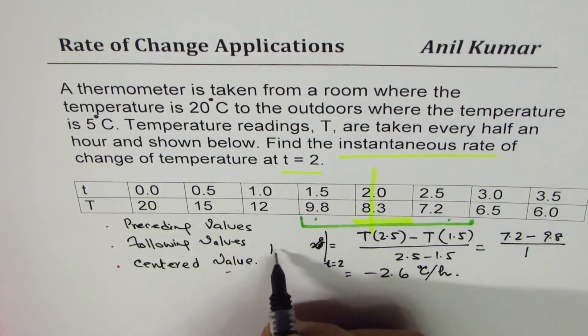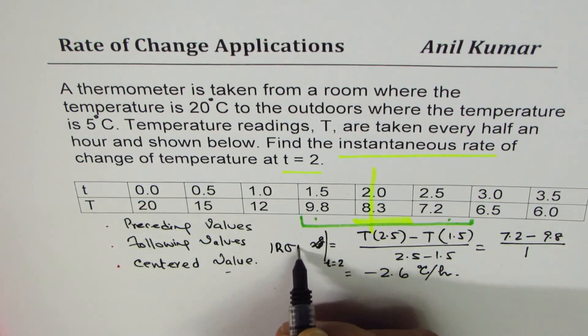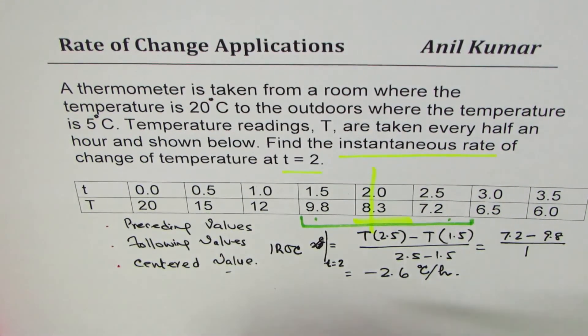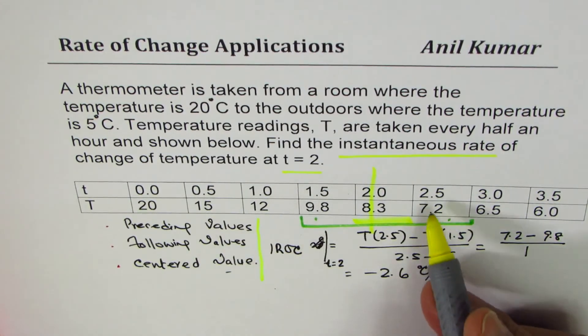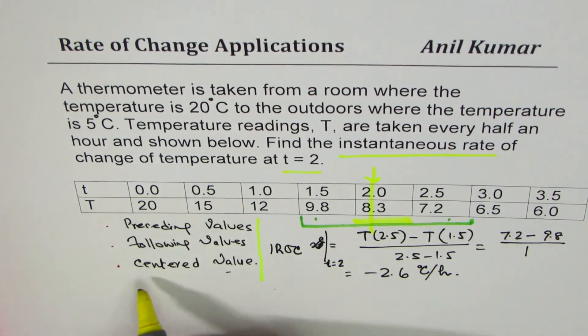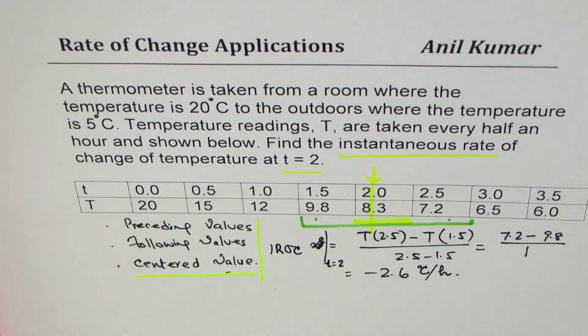That is the instantaneous rate of change of temperature at 2. The method used was centered value, and we found this to be 2.6 degree centigrade per hour. I'm Anil Kumar and I hope that helps you understand how to use data in a table to find average rate of change and instantaneous rate of change. I'll appreciate if you share and write comments on my videos. Thank you and all the best.